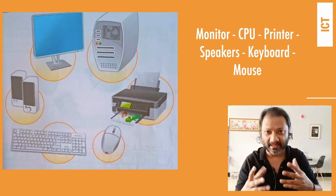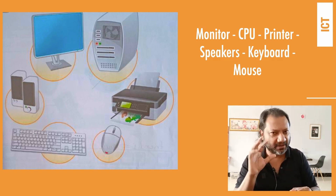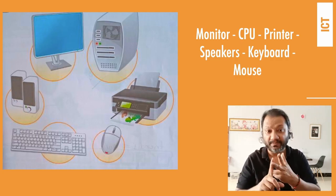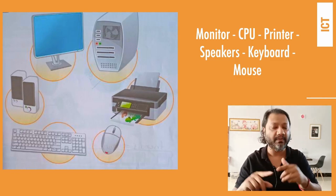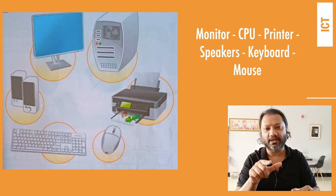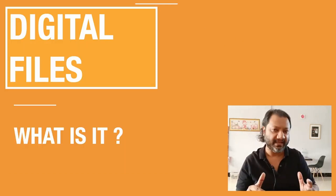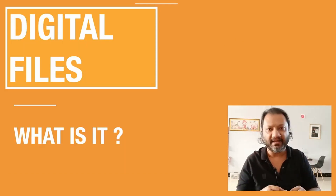Let's repeat some words so we understand the spelling, because some of you are still struggling with it. We have: monitor, CPU, printer, speakers, keyboard, mouse, and also headphones — I haven't included headphones here but we do have them too.